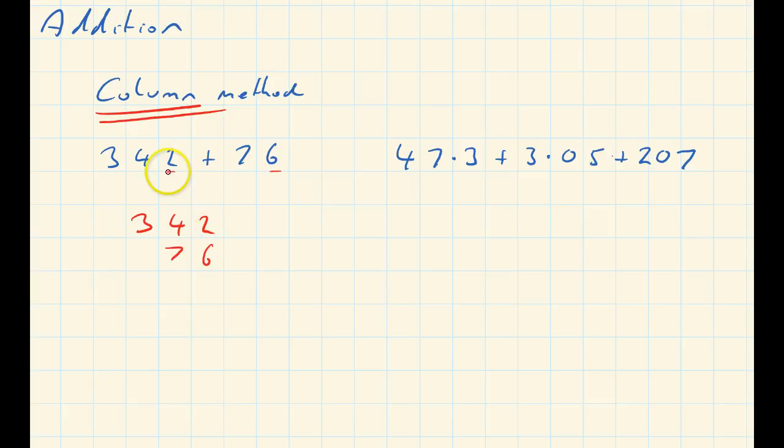Add them up: 6 and 2 is 8, 7 and 4 makes 11. Put down the 1 for the units and carry the 1 for the 10. 3 and 1 makes 4. Nice thing about column method, you can add lots of numbers together.